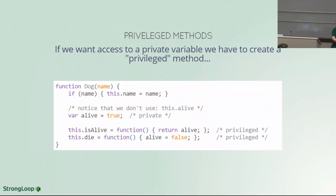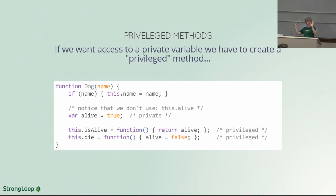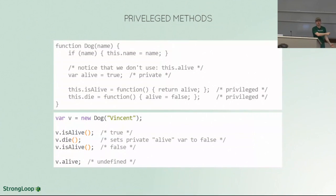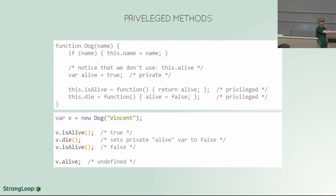Back to our example: these two privileged functions — because they are created within the constructor — will always, for all time, have access to everything that was in scope at the time they were created, which includes the alive variable. So now I can create a new dog v, do v.isAlive — it's true, do v.die, and now v.isAlive is false. Notice that if I try to access v.alive, it will still be undefined — alive does not exist on that object, only within the confines of the constructor function.